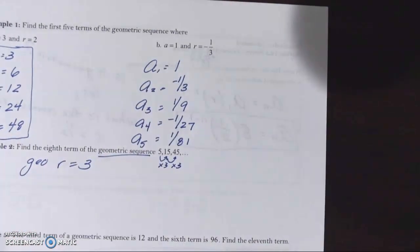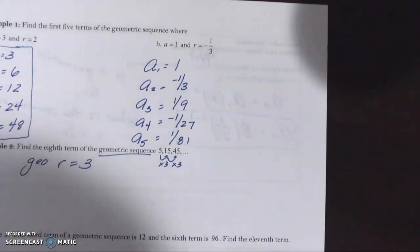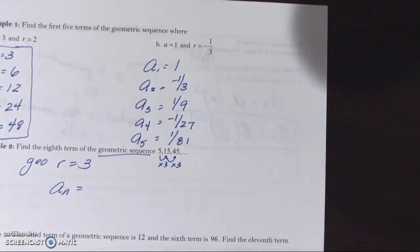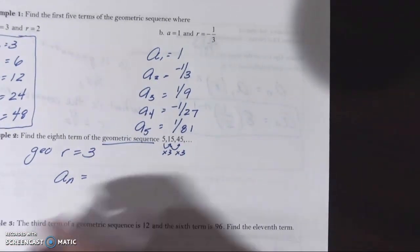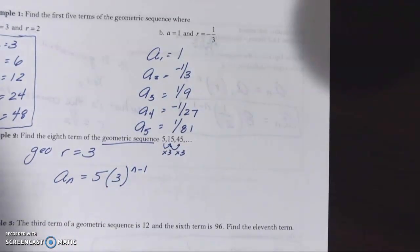And it was told to us with a common ratio of three. Let's build the explicit formula just so we don't have to go like first term, second term, third term, fourth, fifth, sixth, seventh, and then get to the eighth. The nth term of a geometric sequence from the formula on the previous page. First term times common ratio to the n minus one power.